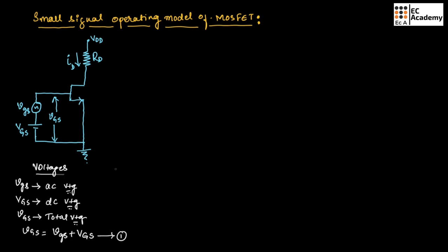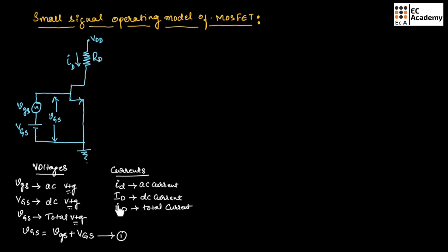Similarly, we have three types of currents: small iD which is AC current, capital ID which is DC current, and small i capital D which is total current. The total current equals AC current plus DC current. Therefore, small i capital D equals small iD plus capital ID. Let us call this equation number 2.